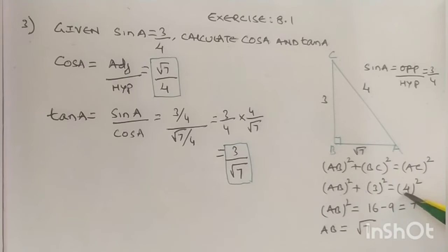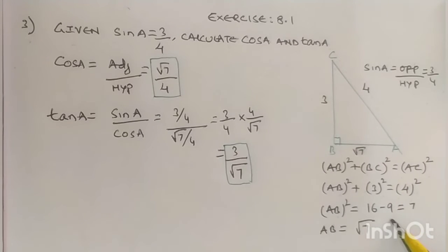AB square equals 4 square, that is 16. 3 square equals 9. 16 minus 9 equals 7, and AB equals square root 7. We have calculated AB equals square root 7.